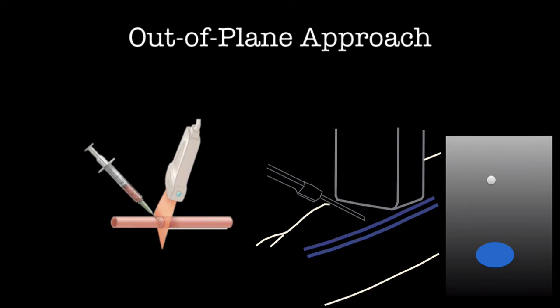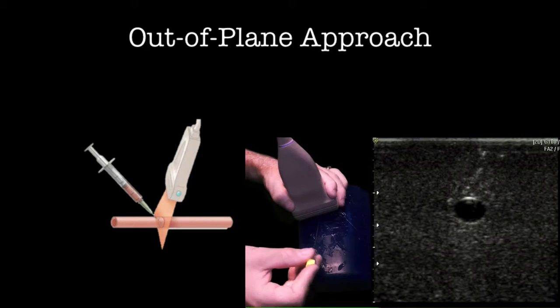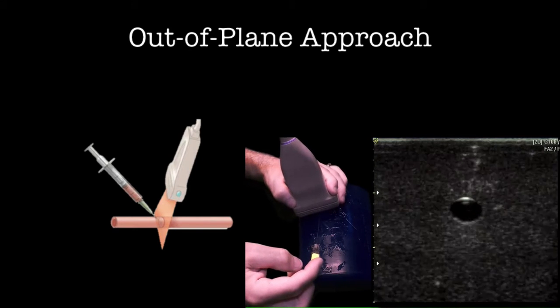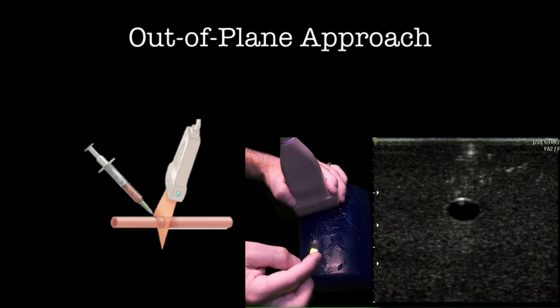The needle is placed under the long face of the transducer as close to the transducer as possible until the needle is seen at the top of the screen. The needle is then walked down to the vein.